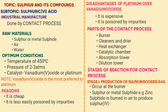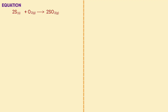The equation using sulfur is: S + O₂ → SO₂. When using a metal sulfide, e.g. zinc sulfide, the equation is: ZnS + O₂ → ZnO + SO₂.